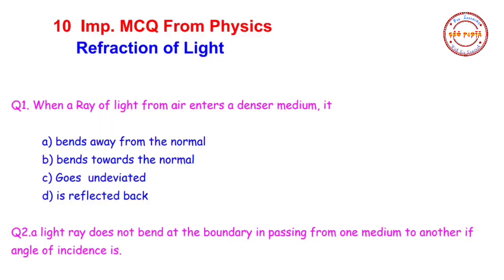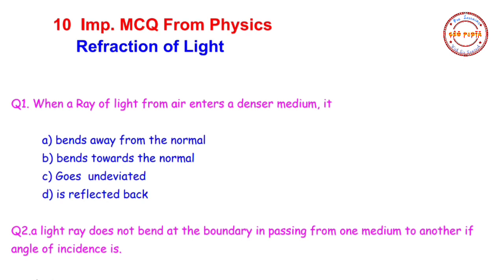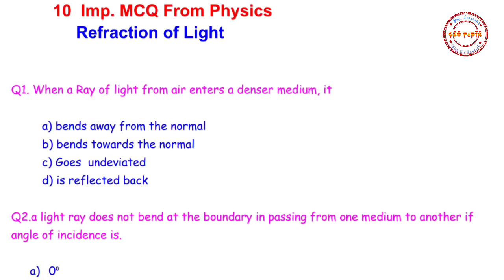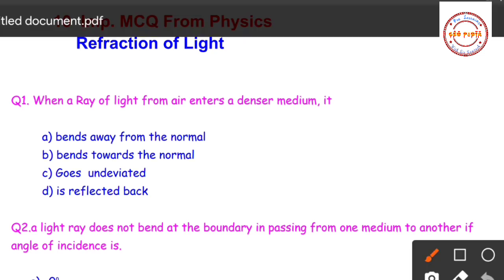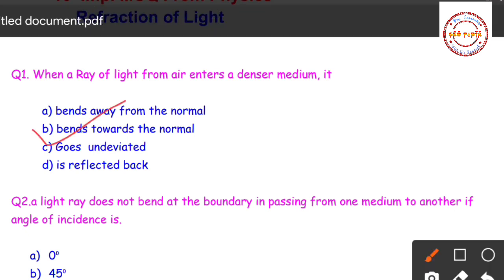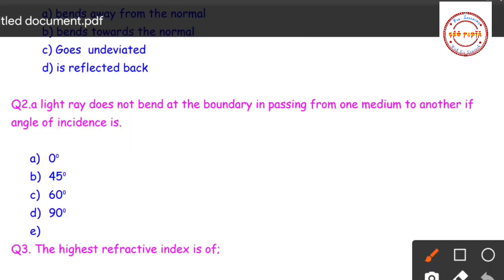Question number one: when a ray of light from air enters a denser medium, what happens? First option: bends away from the normal. Second option: bends towards the normal. Third option: goes undeviated. Fourth: it is reflected back. As the speed of light decreases in the denser medium, it bends towards the normal. So option B is the correct answer.